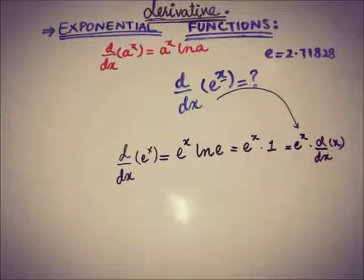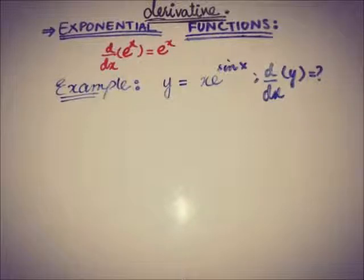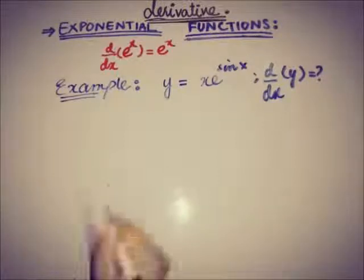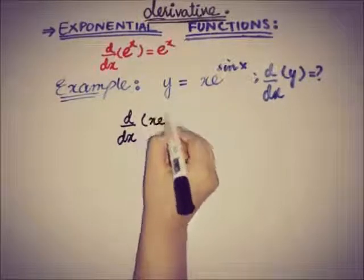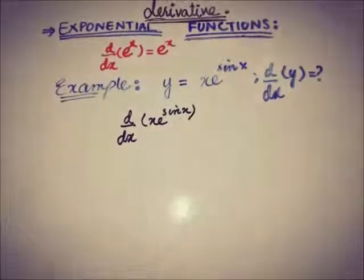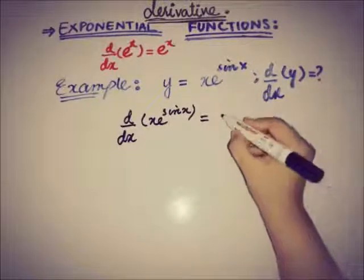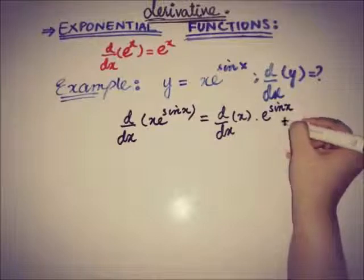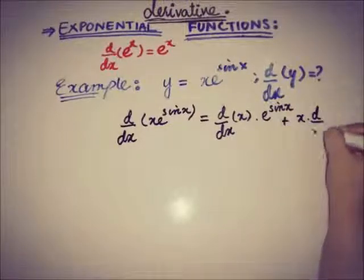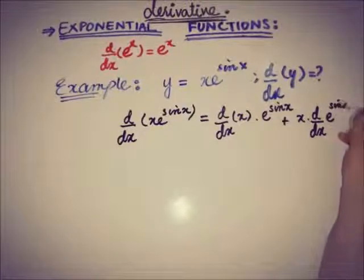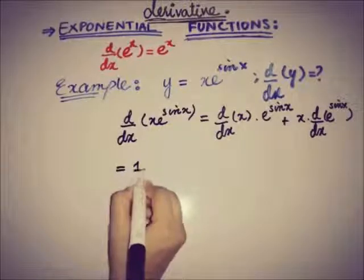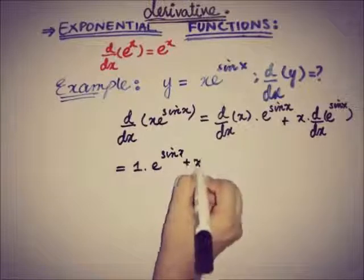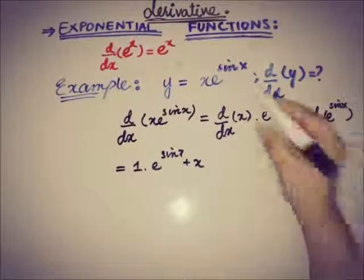Now we will look at an example. The function is y equals x times e to the power sine x, and we have to find its rate of change. We apply the product rule: the derivative of the first function times the second function as it is, plus the derivative of the second function times the first function as it is. So dy/dx equals one times e to the power sine x plus x times the derivative of e to the power sine x.